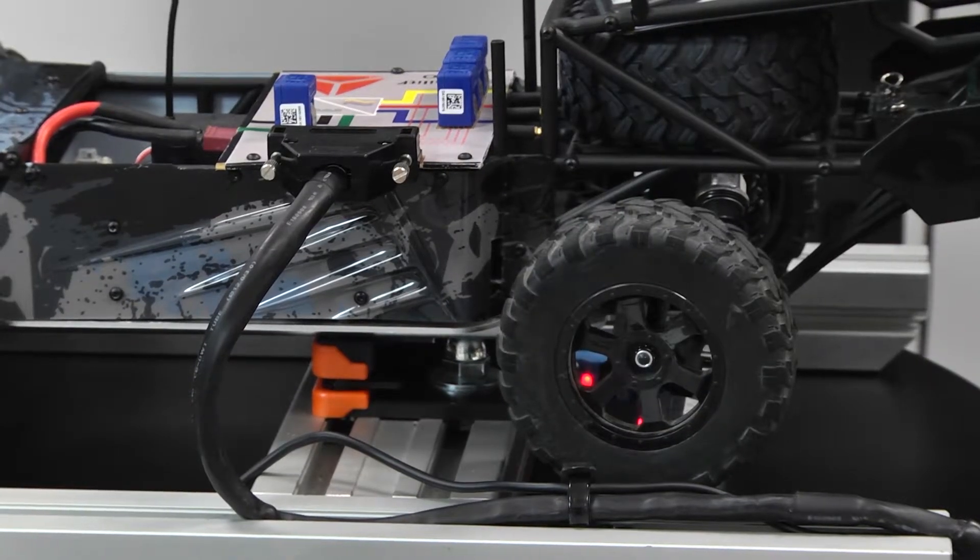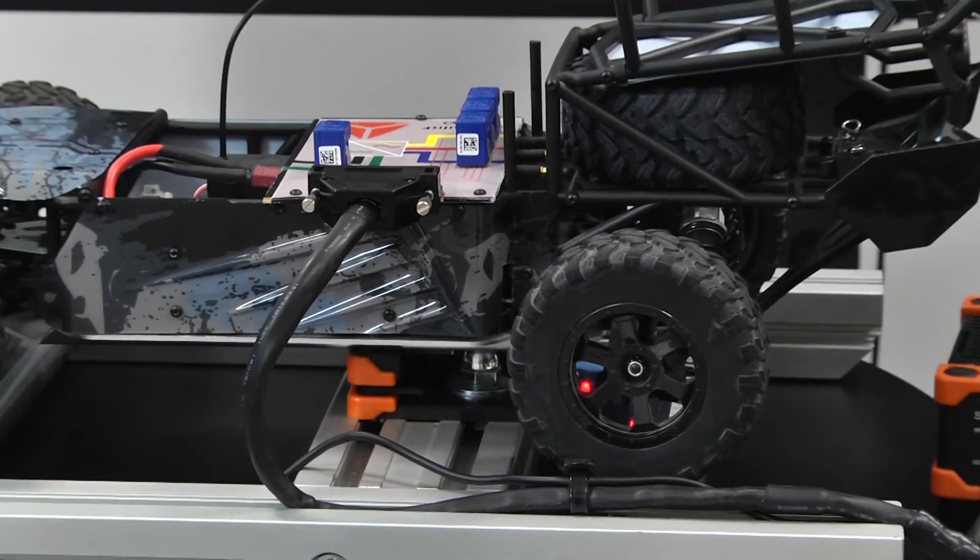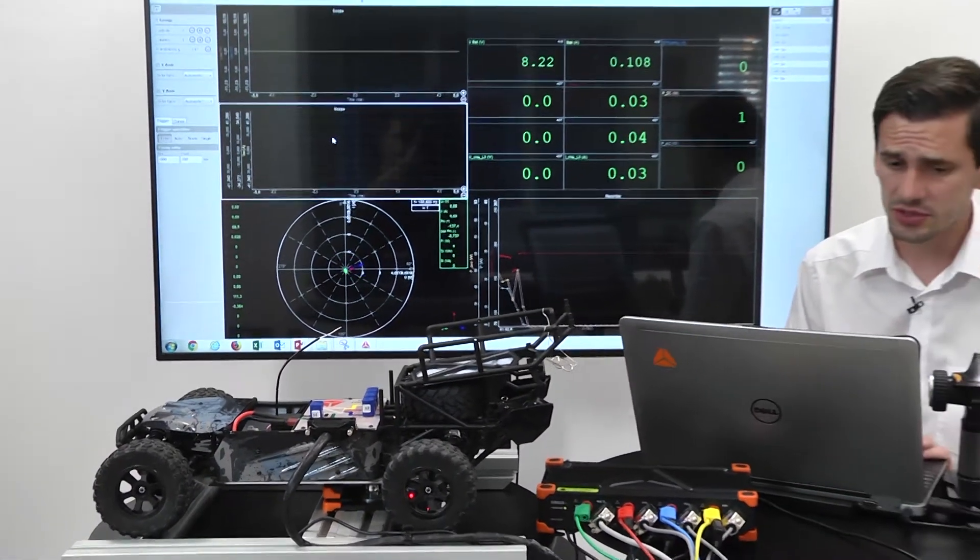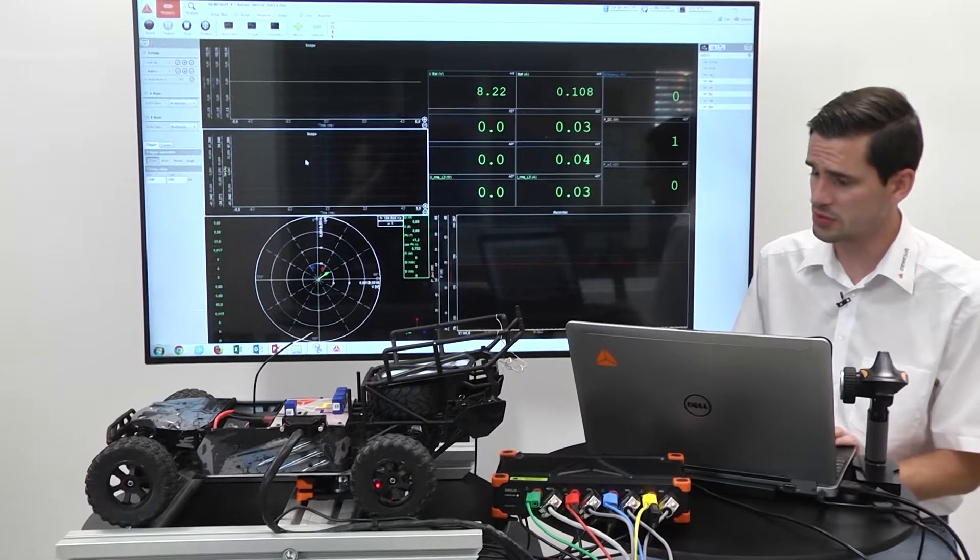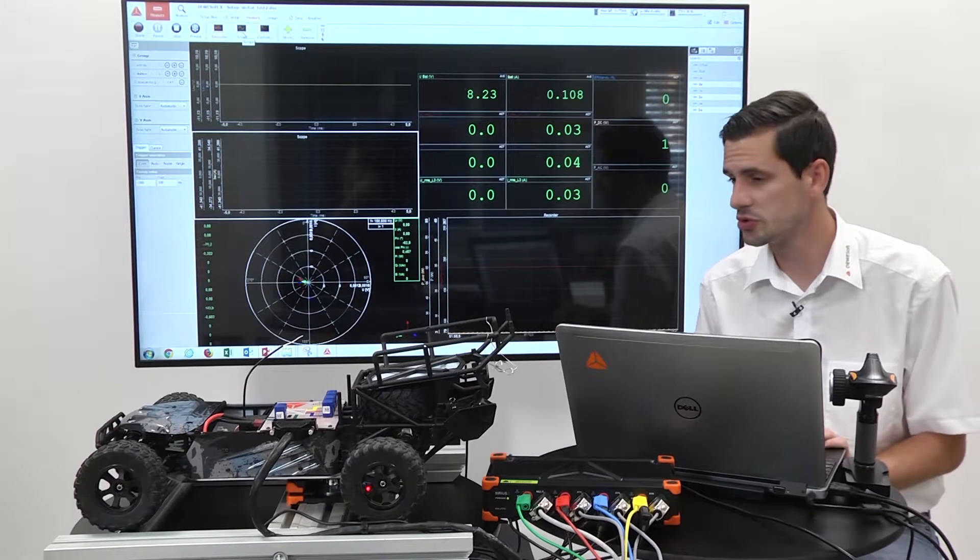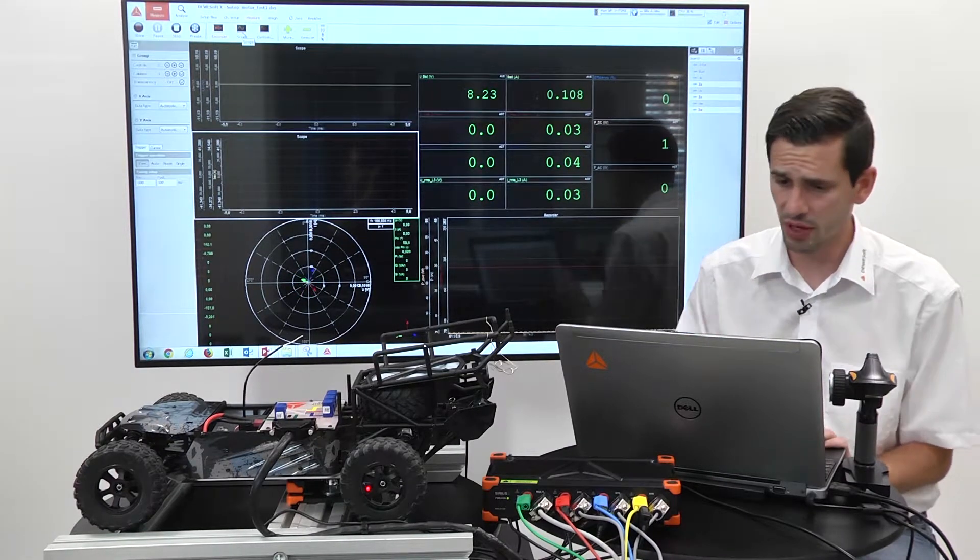In this case, we see it's not a very efficient electric vehicle. The efficiency is around 30-40%. We can also see from the waveform of the current it's not the perfect control electric vehicle, but enough to show the capabilities of the DC power analyzer.